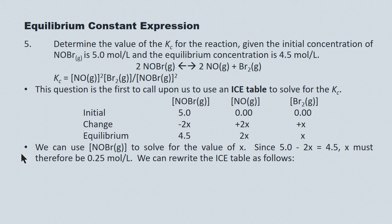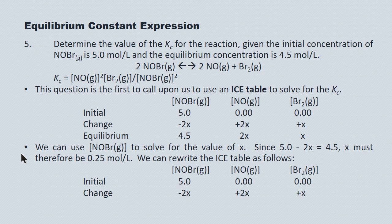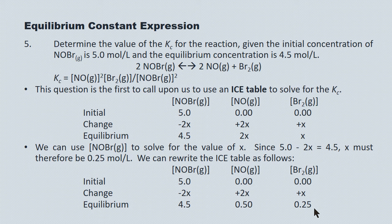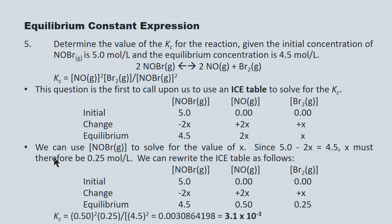Setting up the equation: 5.0 minus 2x = 4.5, so x = 0.25 mol/L. We can now rewrite the equilibrium concentrations: NO is 0.50 mol/L and Br2 is 0.25 mol/L. Plugging all three equilibrium concentrations into the Kc expression, we get a value of 3.1 × 10⁻³. The units are dropped.